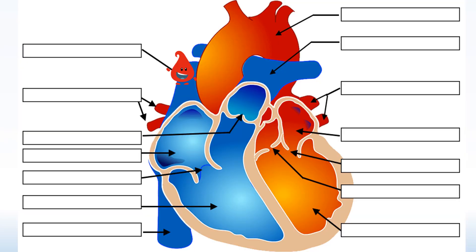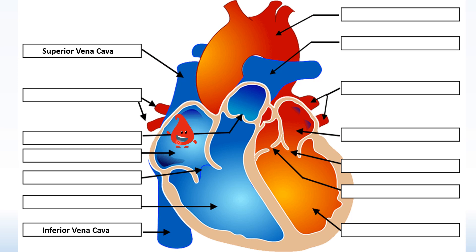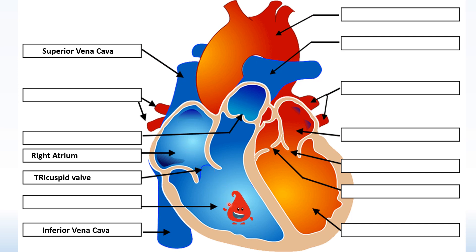Now we know the structure of the heart, we need to know the pathway of the circulatory system. When blood returns to the body, it returns via the vena cava — the inferior vena cava brings blood from the lower body, and the superior vena cava brings blood from the upper body. Blood enters the right atrium. The right-hand side is blue because the blood is currently deoxygenated, as it's coming from the body. The right atrium contracts, forcing blood through the tricuspid valve into the right ventricle. The 'tri' and 'RI' help you remember it's always on the right-hand side. The purpose of the tricuspid valve is to prevent backflow into the right atrium. The right ventricle then contracts, forcing blood into the pulmonary artery, which goes to the lungs.